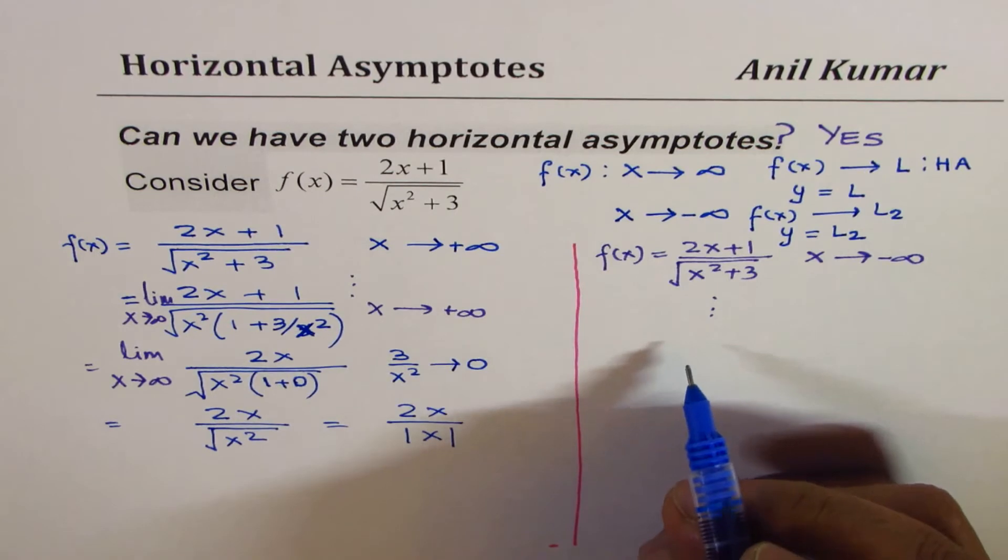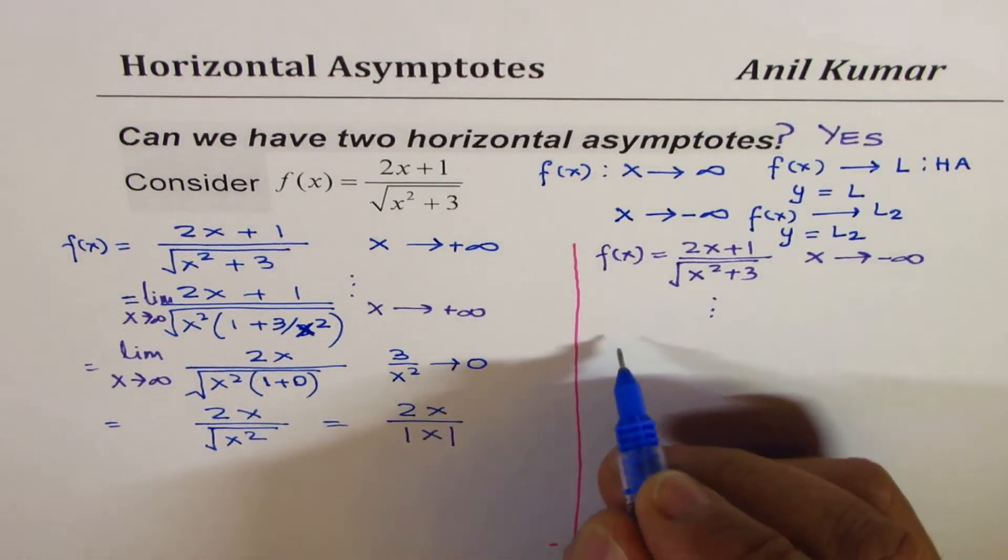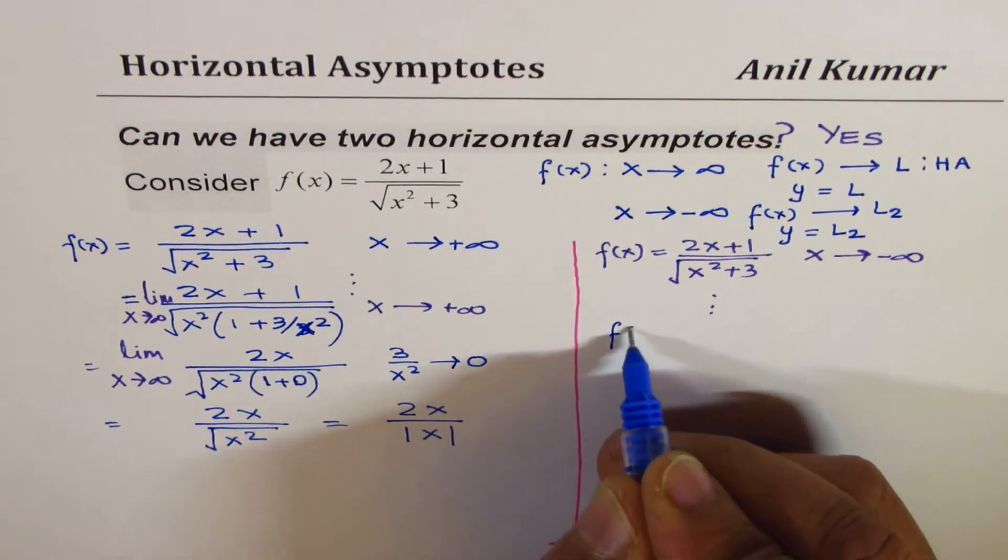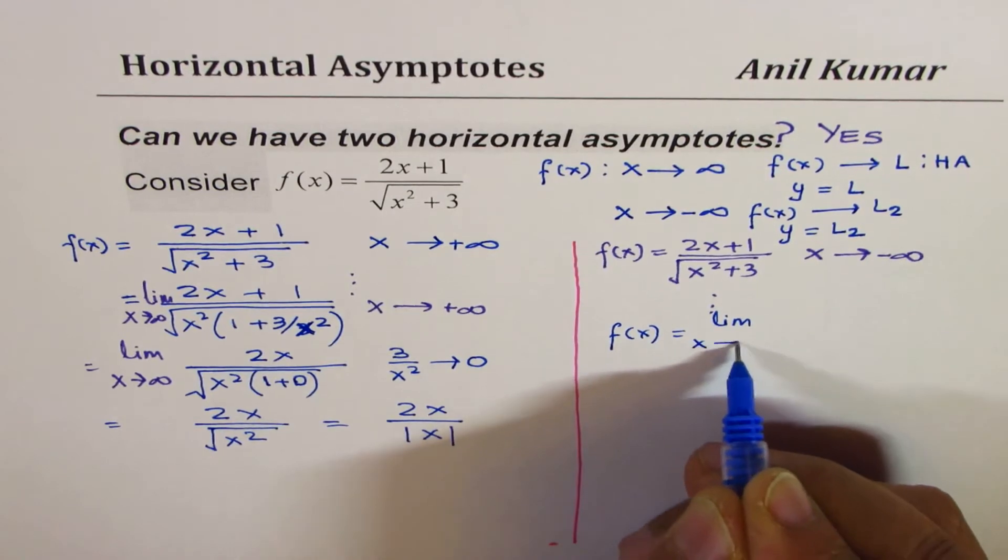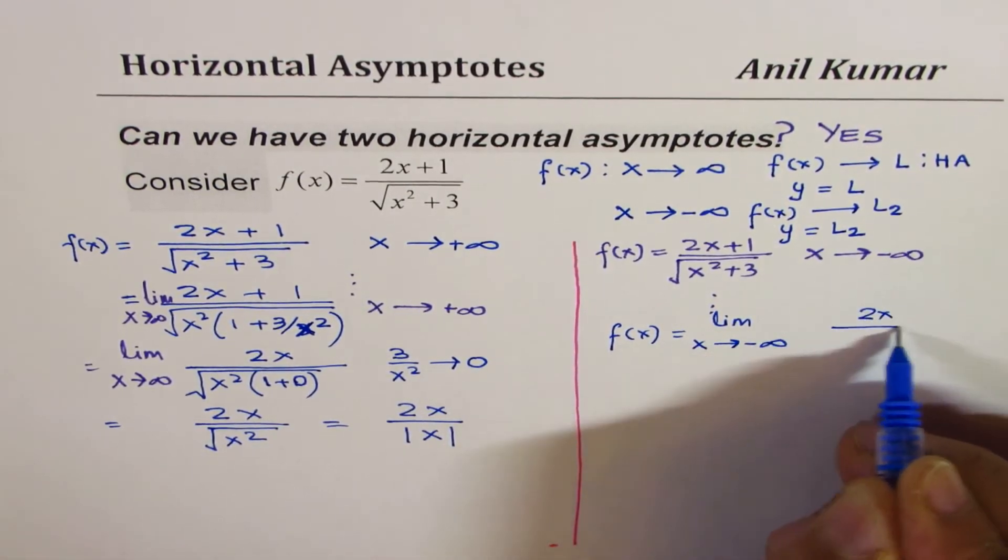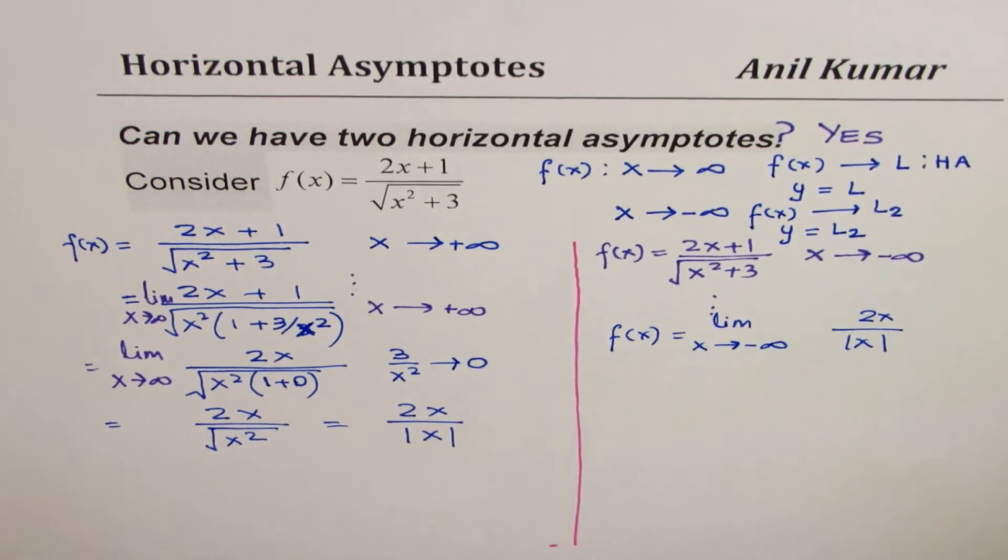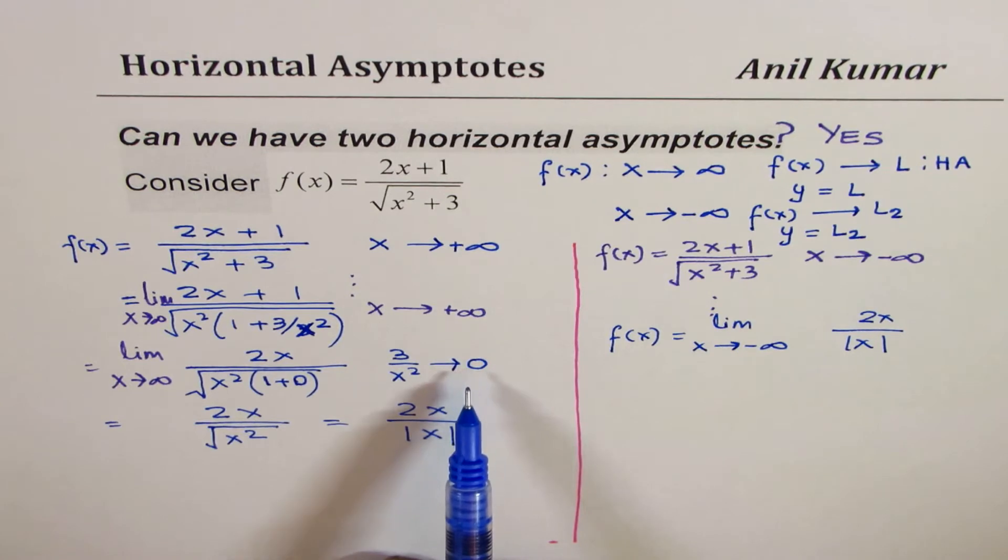If you follow the same steps here, you will get the same result. The limit when x approaches negative infinity will be 2x over absolute value of x. You get the same result since this x² is also positive in any case. 3 divided by a large number is 0, whether you add it or subtract it, it doesn't make a difference.